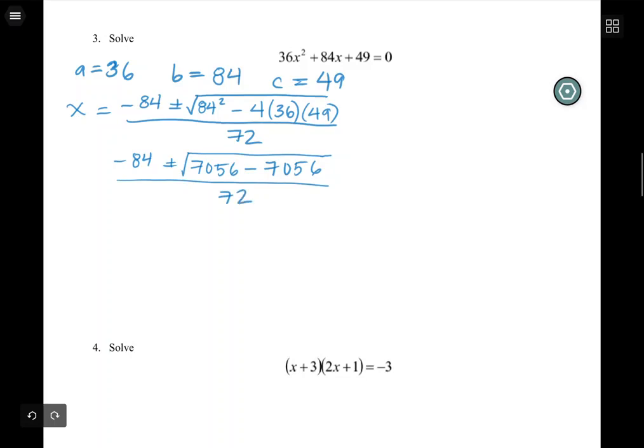So I was just mentioning this discriminant business. That number under the square root tells you about how many solutions you're going to have. So we got negative 84 plus or minus the square root of zero. The square root of zero is still zero, and negative 84 plus zero is negative 84, negative 84. So my answer is just negative 84 over 72.